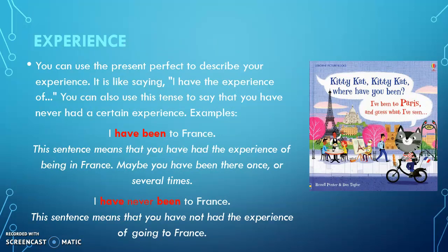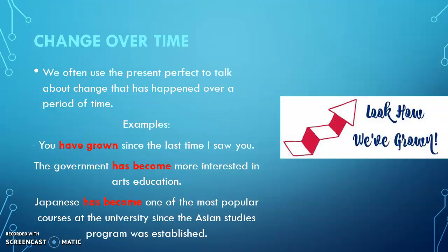Vamos a continuar con los usos. El primero es experiencia. Aquí voy a hablar de las experiencias que he tenido o las que todavía no he tenido. Por ejemplo, 'I have been to France' significa que tengo la experiencia de haber estado en Francia — cuándo fui no lo sé, pero tengo esa experiencia. Si yo digo 'I have never been to France,' significa que no hemos estado en Francia, todavía no tengo esa experiencia pero estoy esperando cumplirla.